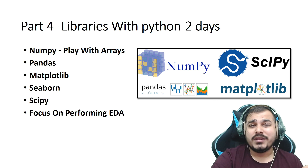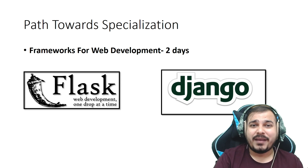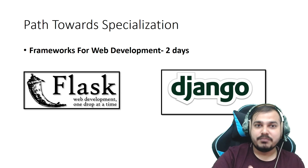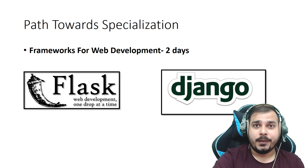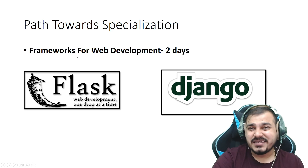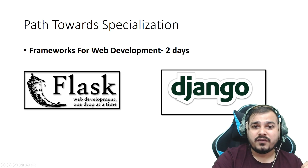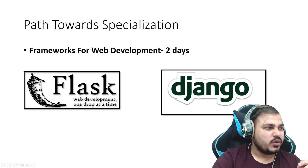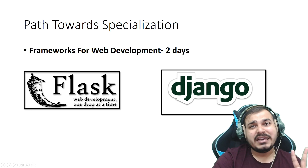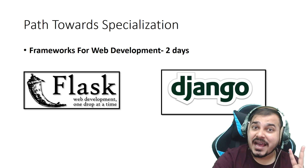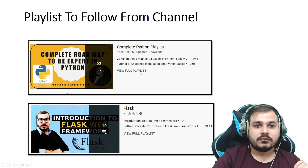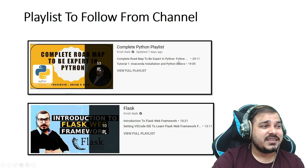This is the final part of the core learning plan, and it will definitely get you started with Python. The specialization part — web development frameworks — is optional and not compulsory initially. You can learn it after machine learning or deep learning. Here you can spend two days on Flask or Django. I'd suggest going with Flask only, as Django will take at least five days. Flask is more than sufficient for getting started, and you can create amazing web apps and APIs with it. I've also created an entire playlist on Flask.